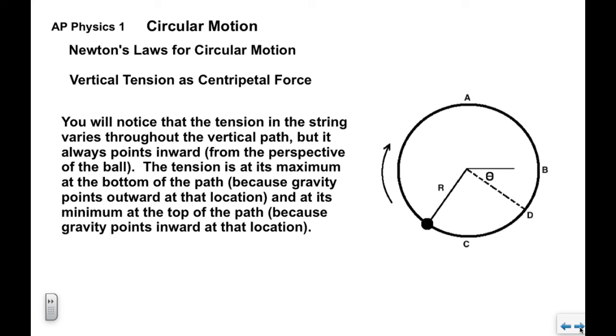What you'll notice when we look at the other points—look at point b, look at point c, look at point d—you'll notice that the tension in the string varies as the object moves through its vertical path. But that ft always points in, at least from the perspective of the ball. The tension is at its maximum at the bottom. It's at its minimum at the top. And it cycles back and forth between maximum and minimum as it goes around the vertical path.